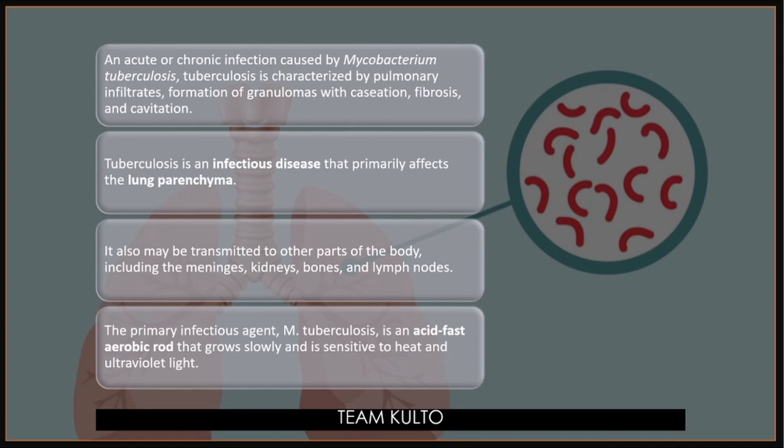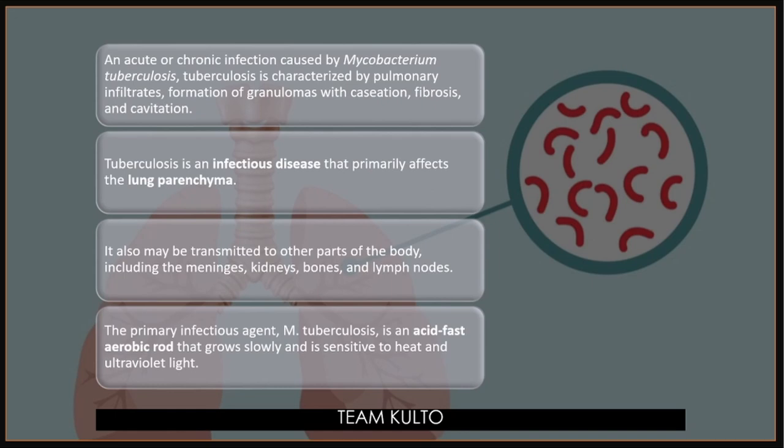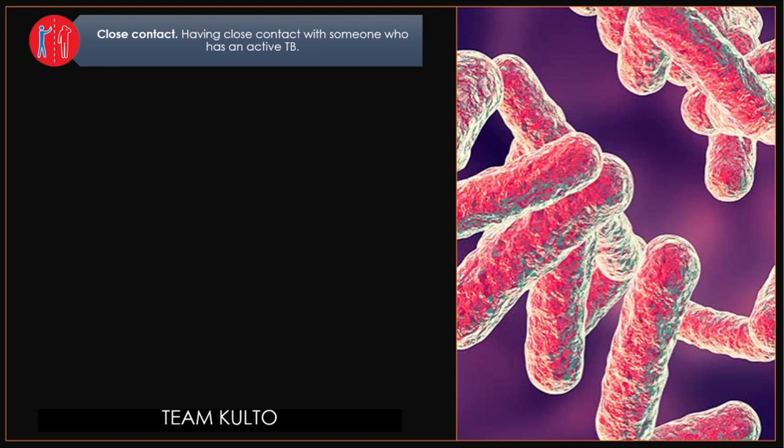Now, what are the causes of tuberculosis? Close contact — having close contact with someone who has active PTB is a major risk factor. Low immunity — immunocompromised status, like those with HIV, cancer, or transplanted organs, increases the risk of acquiring tuberculosis.